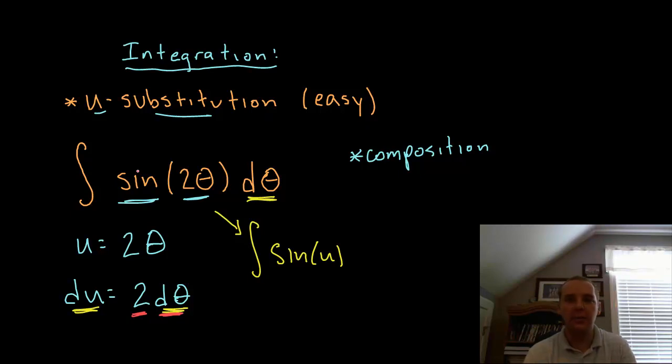So if you need an extra constant, this is something we do all the time, you can give yourself a 2 as long as you balance it with a 1 half on the outside. Because you can move constant multiples outside of the integral symbol, and the 2 times a half would cancel each other away. So we would have a 1 half outside this integral here, that would not go away. But the 2 and the d theta together would become du.